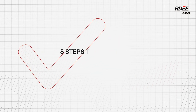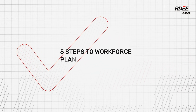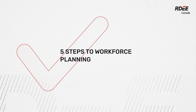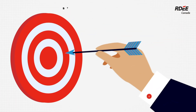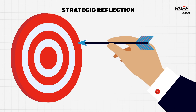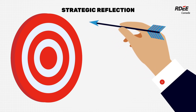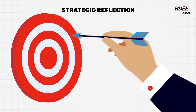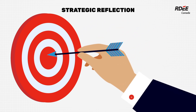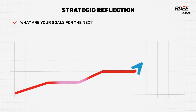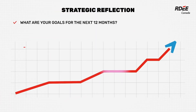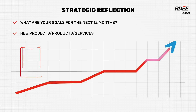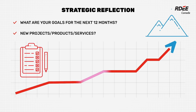This planning involves five steps. Step one: strategic reflection. What are your goals for the next 12 months? What new projects, products, or services are on the horizon? Do you anticipate growth in demand?